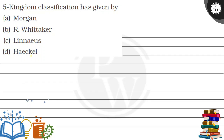Hello guys! Let's see the question. The question is: Five Kingdom Classification was given by whom? The options given are: Morgan, R.H. Whittaker, Linnaeus, or Haeckel. Who has given the Five Kingdom Classification?